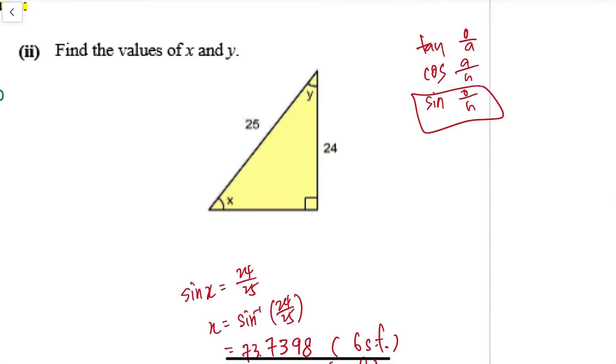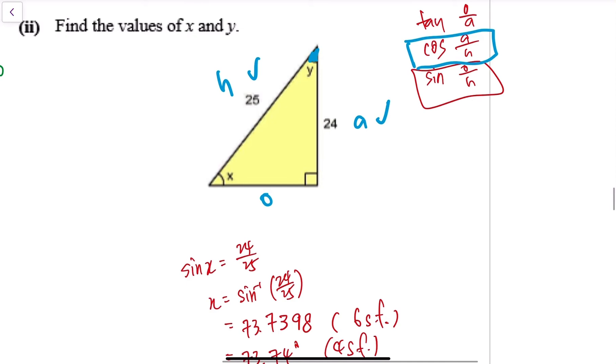So this will be H, this will be O, this will be A as my reference angle. I have this, I have this, so I should use cosine to find angle y. You can use sine or tangent with Pythagoras theorem to find the other side, but let's not over-complicate things.